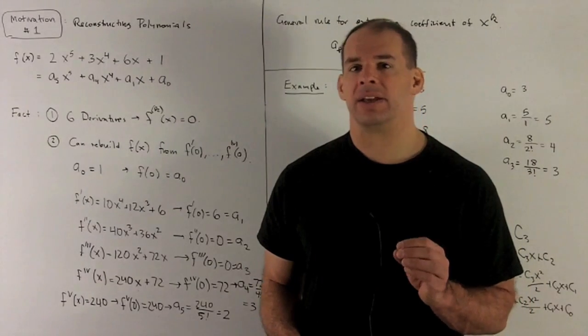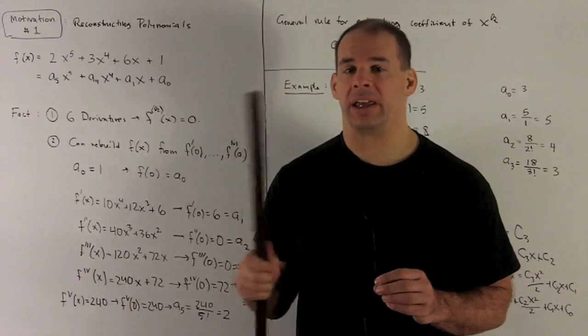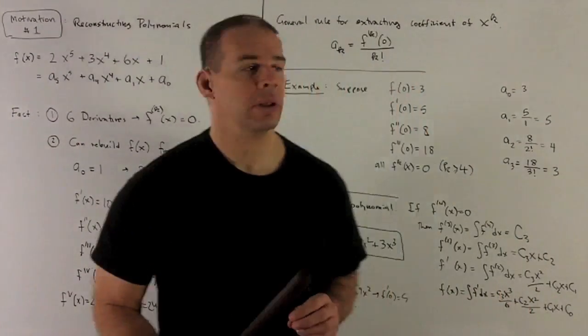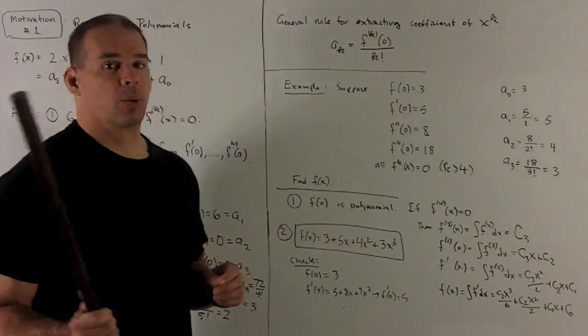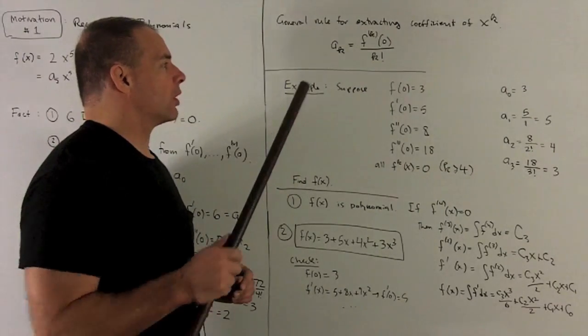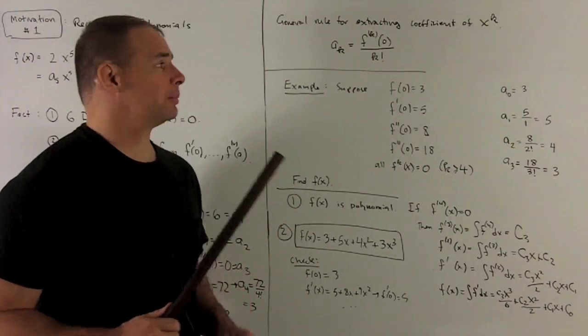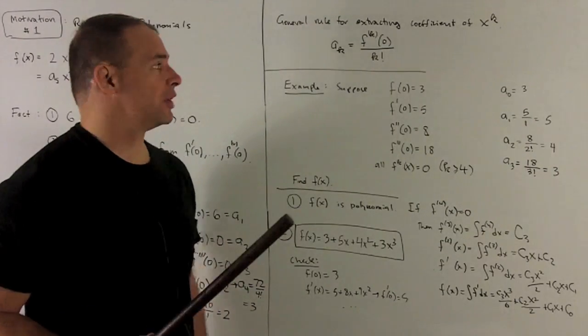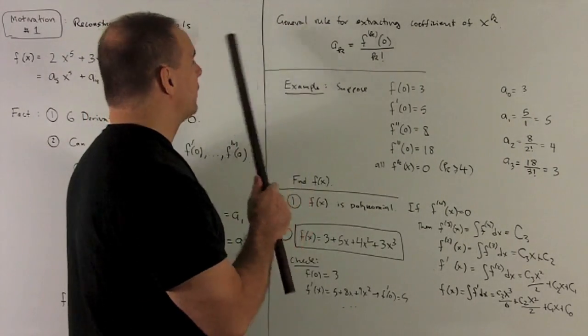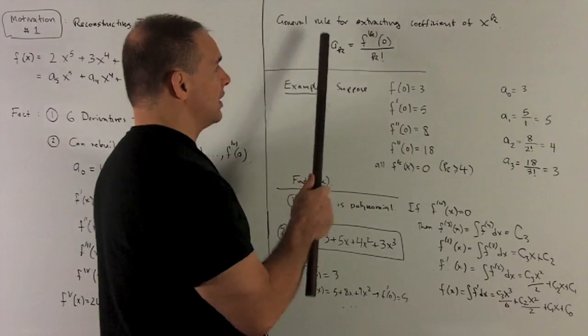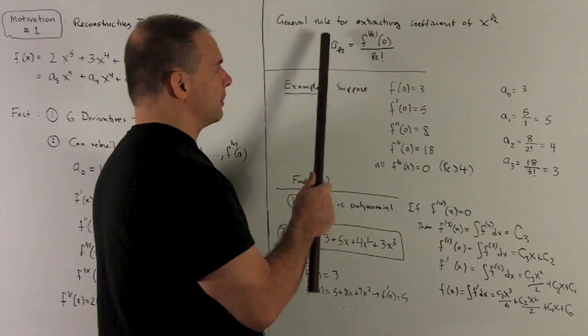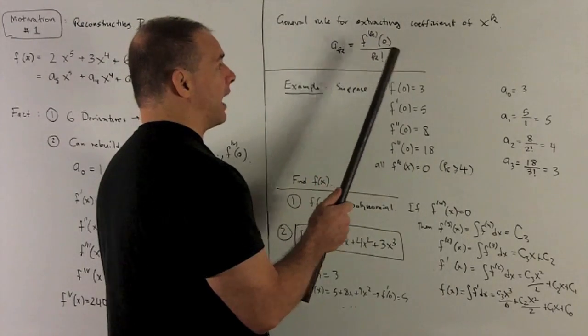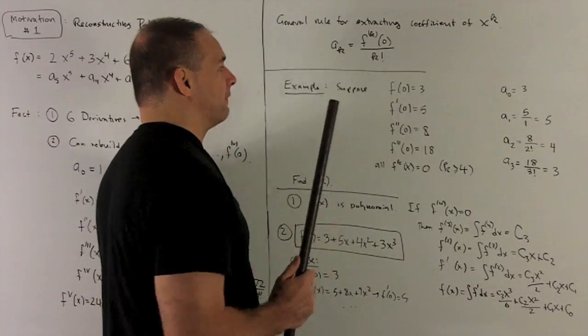So the idea is we have a method for completely characterizing polynomials and how to rebuild them. What's the rule that we just used? This is what we're going to call the Maclaurin coefficient. We'll also see a variation called Taylor coefficient. So if I want that coefficient, the a0 or whatever, a_k, you're going to take the k-th derivative of your f, evaluate it 0, and then divide by k factorial.